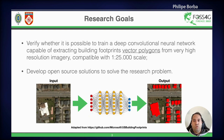My research goals were to verify whether it is possible to train a deep convolutional neural network capable of extracting building footprint polygons from very high resolution imagery compatible with 1 to 25,000 scale. I also tried to develop as much as I could open source solutions to solve the research problem.